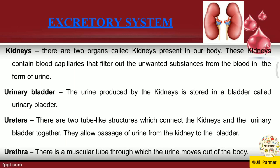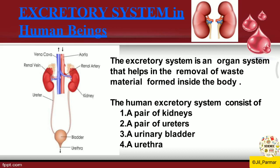Then, ureters: these are two tube-like structures which connect the kidney and the urinary bladder together. They allow the passage of urine from kidney to bladder. As you can see in the image, two thin tubes join the kidney and bladder, labeled as ureter. So the ureter's job is to carry the urine produced in the kidney to the bladder.